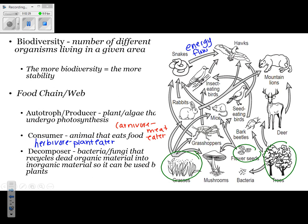The final type of organism on the food web is a decomposer. Decomposers are represented by bacteria and fungi. Mushrooms and bacteria are able to recycle dead organic material into inorganic material so it can be used again by plants. This means they recycle whatever dead organism is in the area — trees, leaves, flower petals, or dead animals like rabbits or mice. The inorganic material being recycled is essentially the nitrogen inside living things.